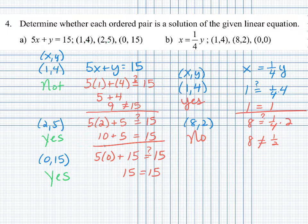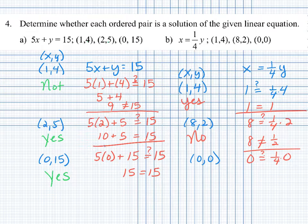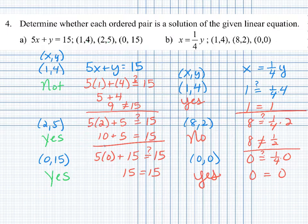The final point is (0, 0). We plug in 0 for x: does 0 equal one-fourth of 0? We see that 0 does equal 0, so yes, that point is a solution to the given linear equation.